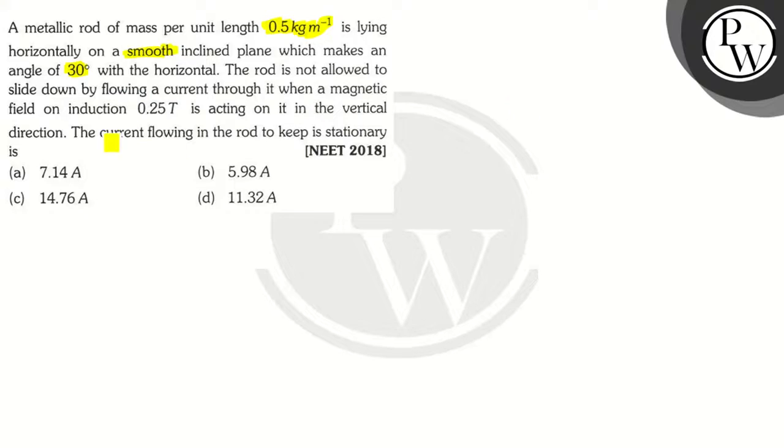The rod is not allowed to slide down by flowing a current through it when a magnetic field of induction magnitude 0.25 tesla is acting on it in the vertical direction. We need to find the current flowing through the rod to keep it stationary.